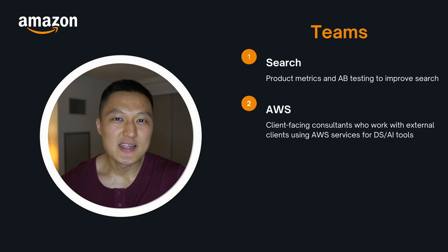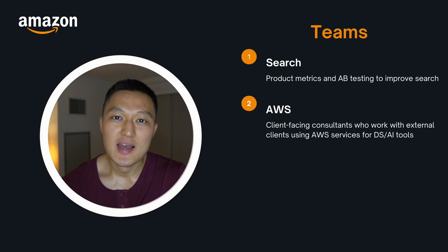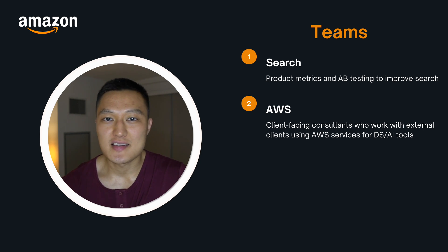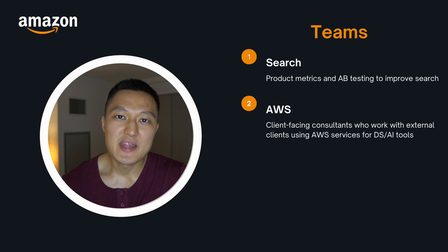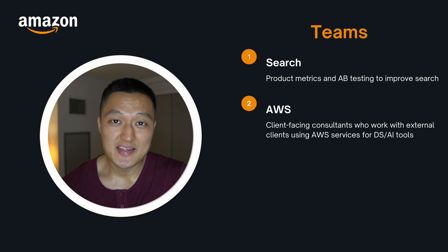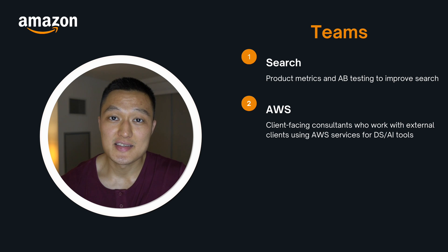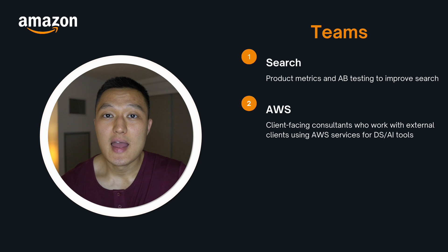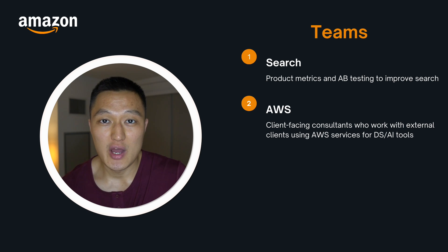The next team is AWS. You can think of the AWS team as basically business consultants for AWS services. AWS has cloud instances and storage, but also other functionalities like AI and data visualization tools. As an AWS data scientist, you're probably going to work with external clients and brands, building data science capabilities in terms of data visualization, modeling, and potentially experimentation as well.